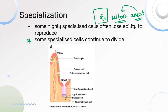We do have some specialized cells that continue to divide. An example is in the small intestine — this is a tiny chunk of small intestine. Food travels through the lumen, and these are the cells of the wall. We have stem cells in this crypt; those undifferentiated stem cells reproduce and replace our small intestine wall cells, called the endothelium. We actually replace the inside of our small intestine every four to six days because the food traveling through damages those cells so fast — a whole new inner wall every four to six days!